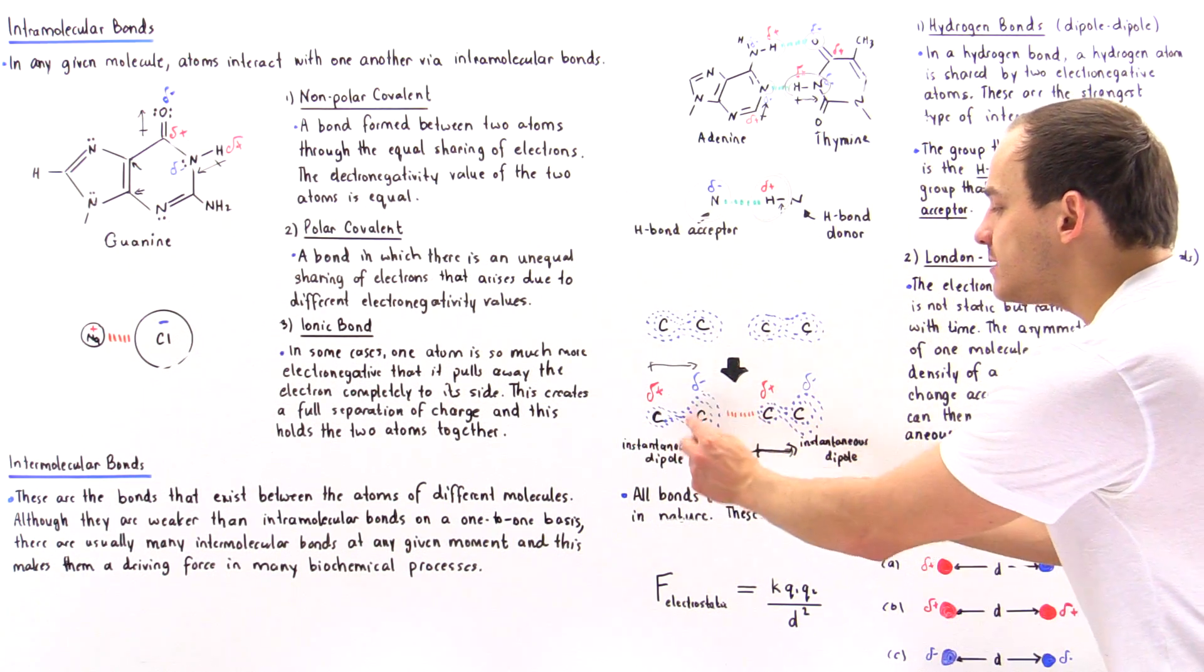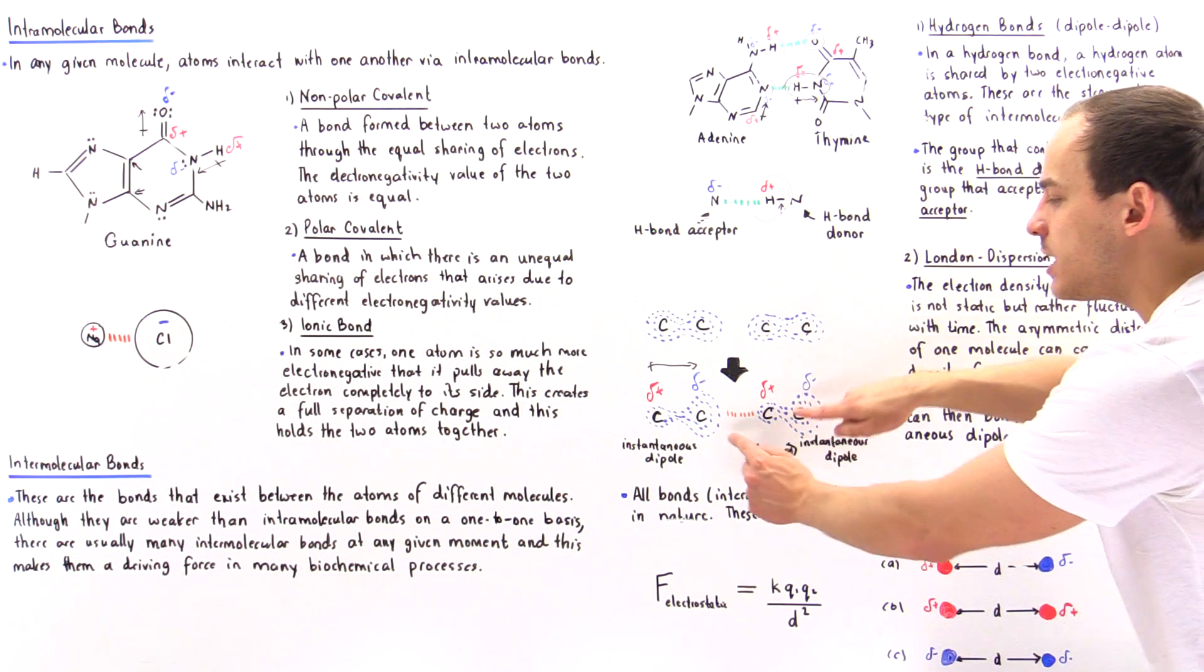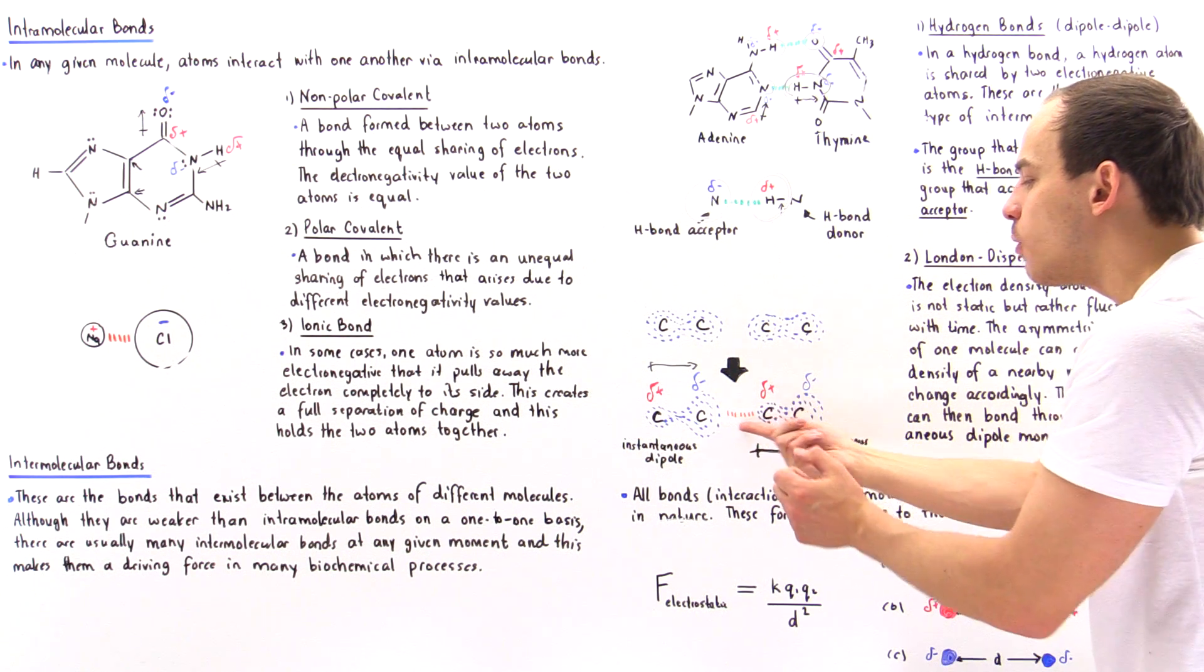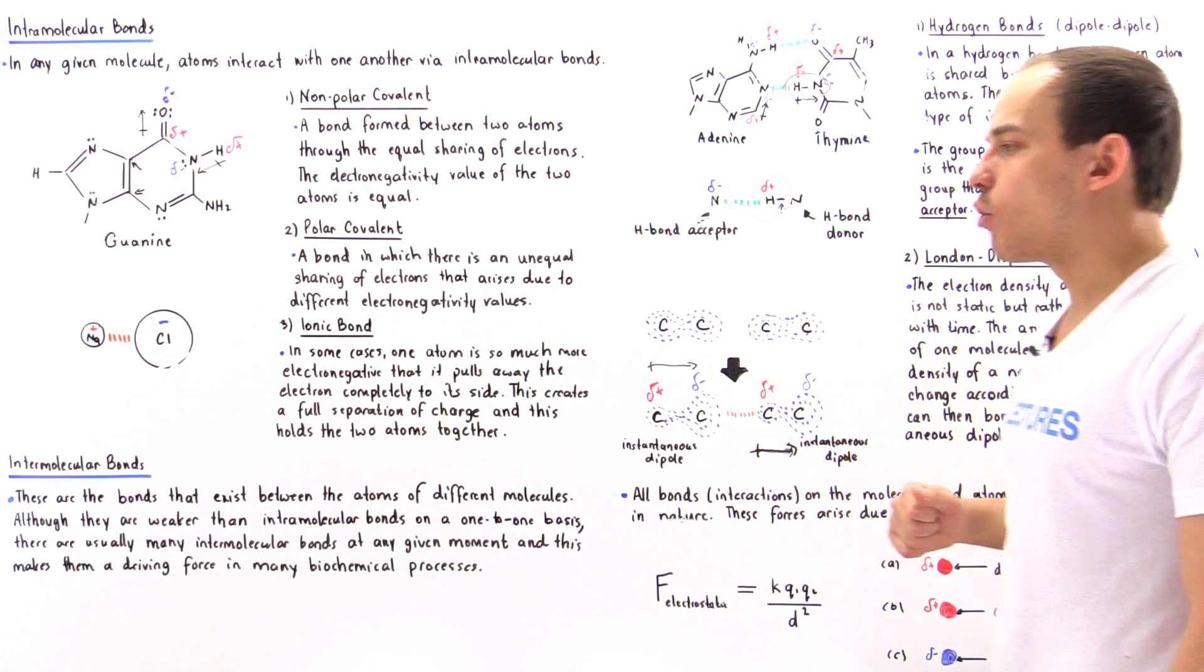These electrons repel other electrons, creating a partial positive charge here. These can interact for a moment in time, and this is what we mean by instantaneous interaction, which is another way of saying London dispersion forces.